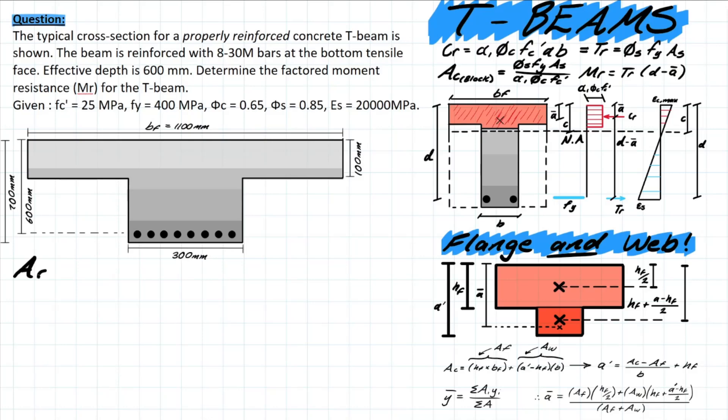We're going to start first with the area of concrete, and this formula is simply derived from that previous a formula that we used before. It's just simplifying a times b into a singular variable for area. We have 0.85 times the yield strength times the area of steel which we solved for previously as 5600, and then on the bottom we have 0.8 times 0.65 times 25 MPa. Then solving for that you're left with the value of 146,461 millimeters squared.